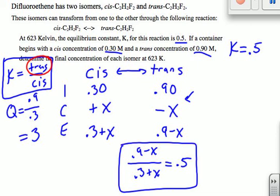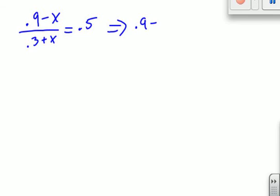So I am going to move this to another page because I don't really know if I have room to solve this. So I have 0.9 minus x over 0.3 plus x equals 0.5. So I'll just solve this algebraically, but hopefully this isn't too big a problem. So we're going to bring over the denominator to the other side. So 0.9 minus x equals 0.5 times 0.3 plus x.